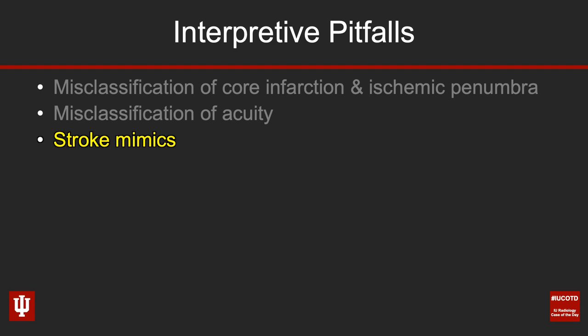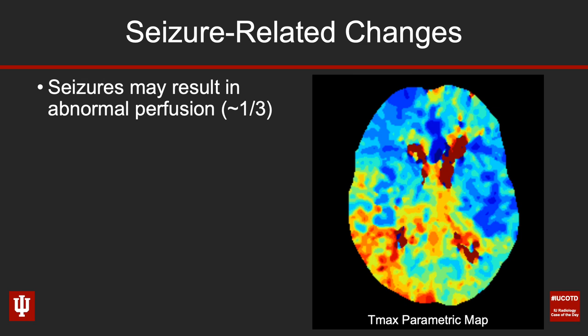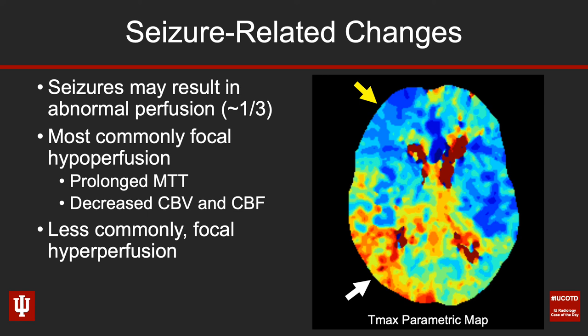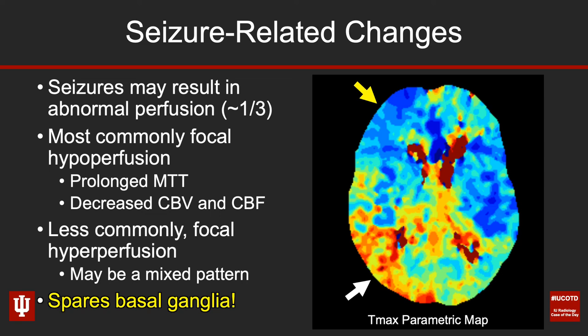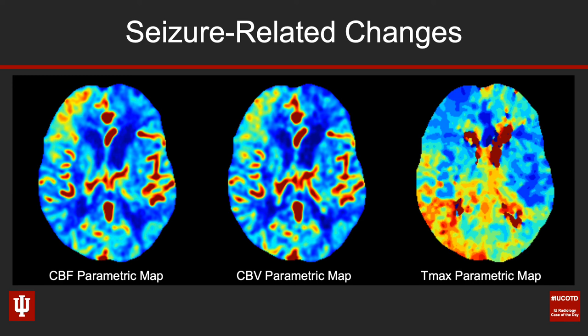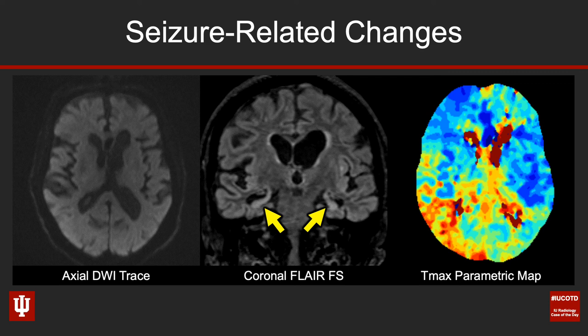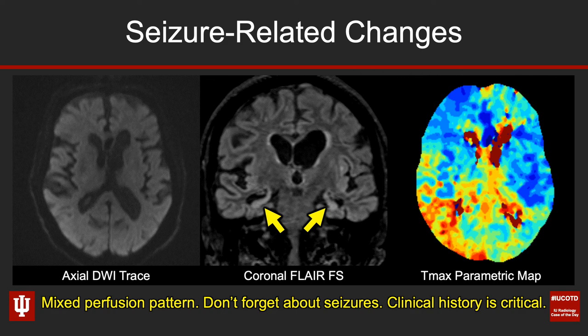Lastly, we're going to talk about some stroke mimics. Seizures can result in abnormal perfusion — it's thought that maybe even up to a third of the time, CT perfusion will show perfusion abnormalities. Most commonly you'll see areas of focal hypoperfusion, as the white arrow denotes, but sometimes areas of hyperperfusion as well. Sometimes you get a mixed pattern, as in this case, where we have hyperperfusion anteriorly and hypoperfusion posteriorly, and importantly the basal ganglia are spared — that may be a helpful discriminator. In the same patient, there was no reduced diffusivity, and interestingly the patient had bilateral mesial temporal sclerosis. The clinical history is going to be very helpful in teasing that out.